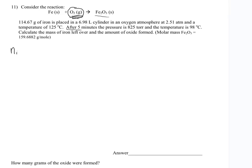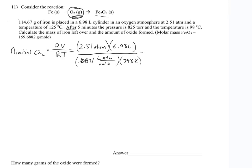The first thing I want to do is figure out the initial moles of oxygen. We're going to use PV over RT. So I've got 2.51 atmospheres - again, only the oxygen is going to obey the gas laws, the iron is a solid - and I've got a 6.98 liter container. R is 0.0821, and my temperature is 125 plus 273, so that's 398 Kelvin.